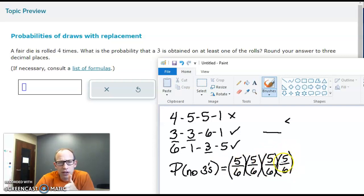Now, why are we multiplying all these? Because they're independent. Whatever we do on the first try doesn't impact the chance of not rolling a three on the second try or the third or the fourth.